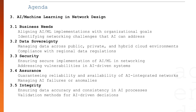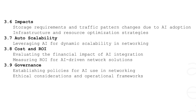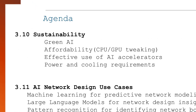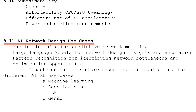Then we will move on to AI and machine learning in network design. This section is full of real-world considerations that network engineers face when integrating AI into their environments — for instance, aligning AI implementations with your organization's business needs, handling data sovereignty issues, and ensuring robust security measures. We will also cover storage and traffic impacts of AI, auto-scalability, cost-effectiveness and ROI of AI solutions, as well as governance, policies, ethical considerations, and sustainability practices.